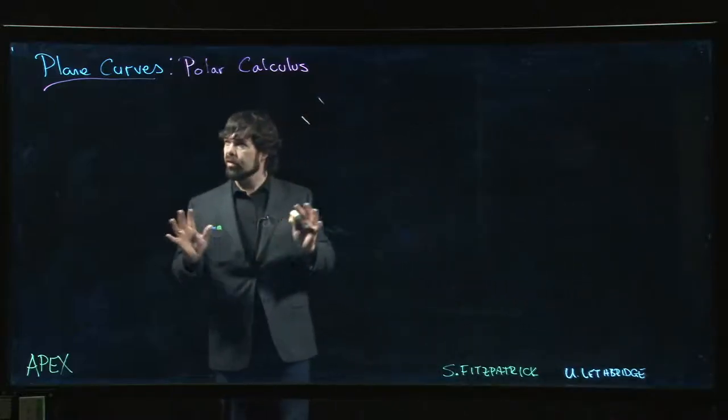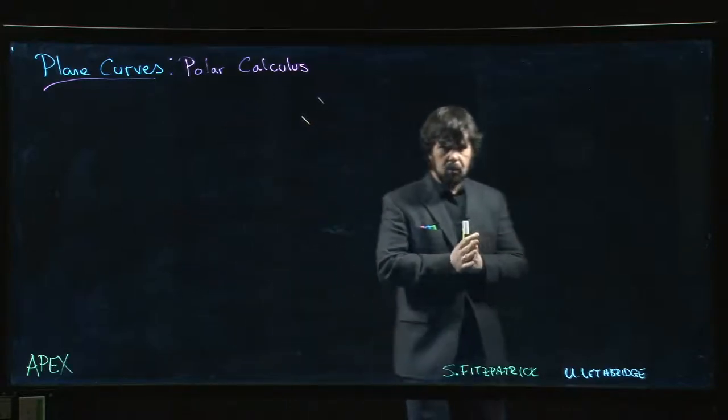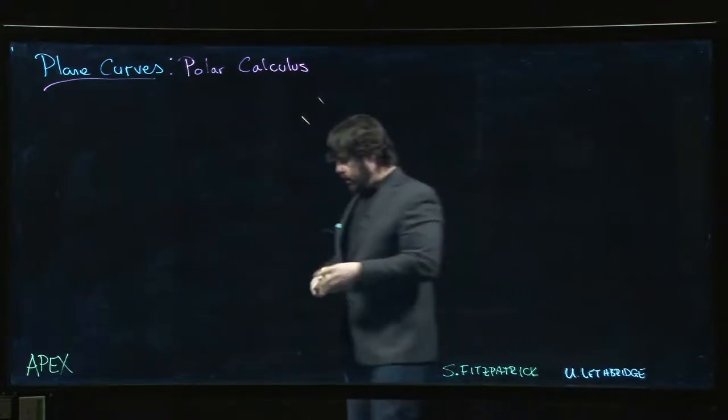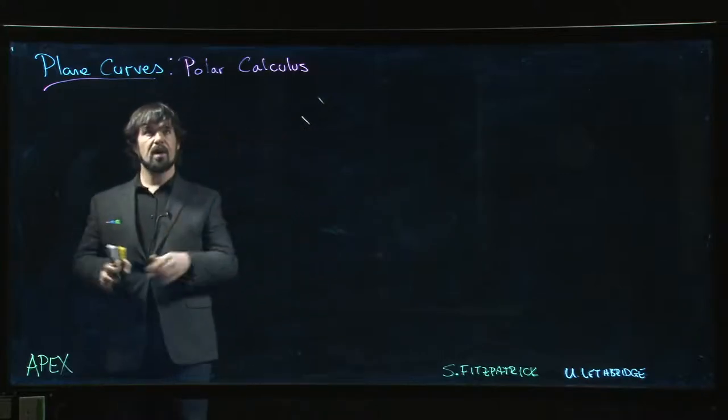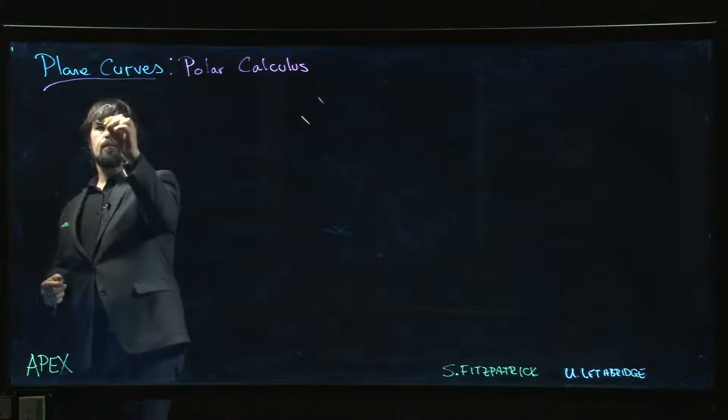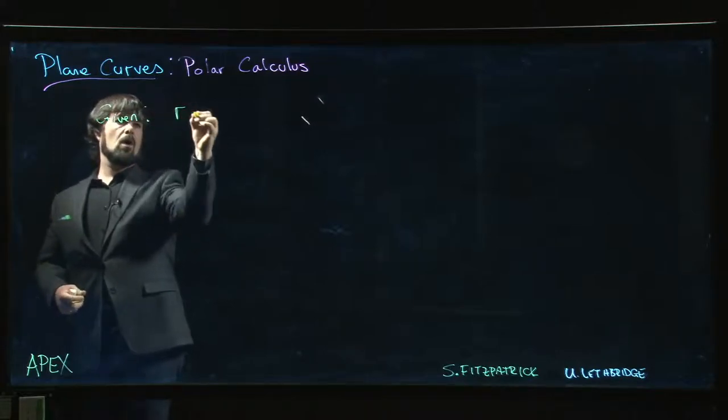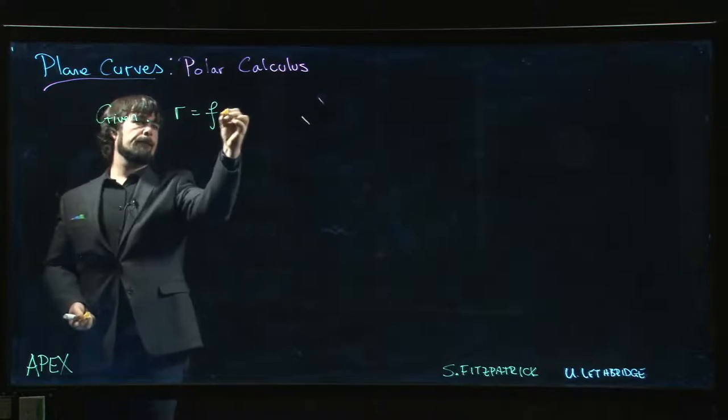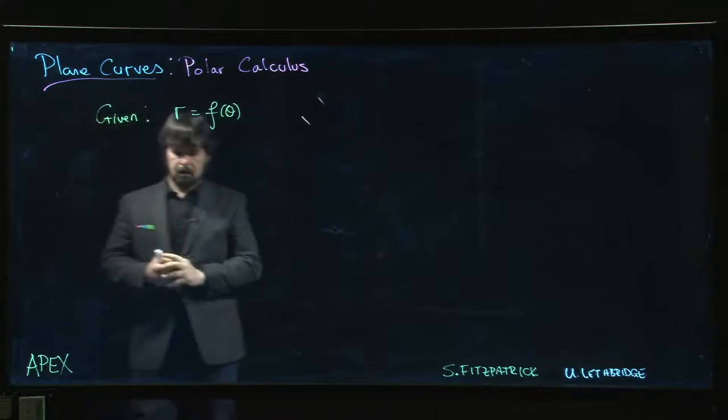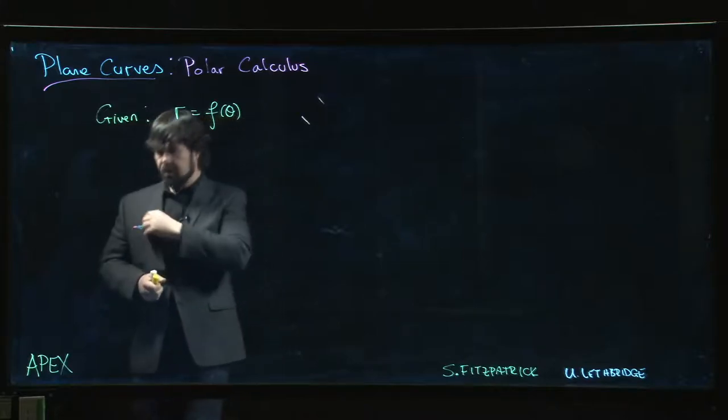So we're finally out of the last section for the chapter on plane curves and we're going to look at calculus in polar coordinates. The key for doing calculus in polar coordinates is you're going to typically be given r as a function of theta, and what we want to do is fall back on what we already know.